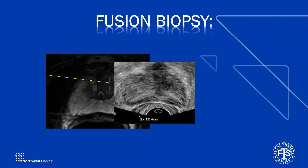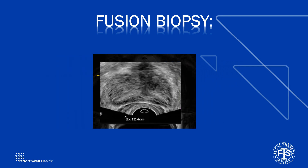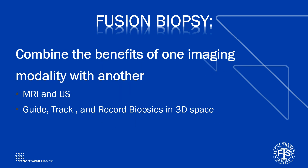The first step in fusion biopsy is understanding how it works. It takes two data sets and merges them together to gain the benefits of each imaging modality. For example, ultrasound is easy, cheap, and can be performed easily in your office and does not require large, bulky equipment like an MRI. But the trade-off is that the sensitivity and specificity of the MRI allow us to see inside the prostate and target specific areas.